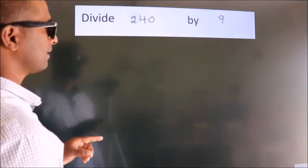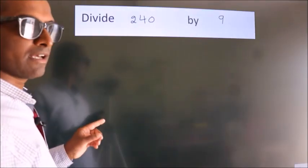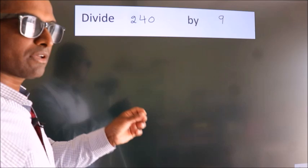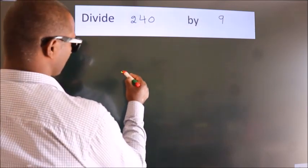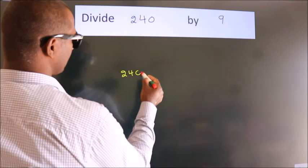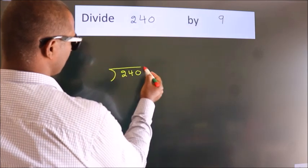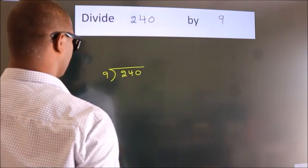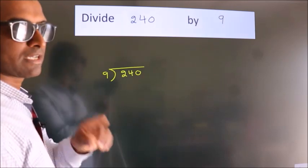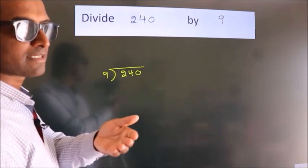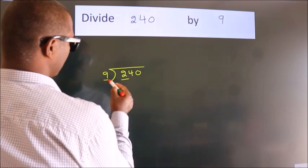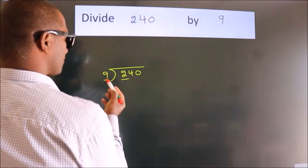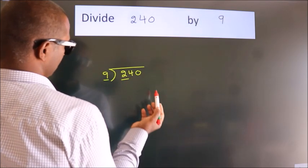Divide 240 by 9. To do this division, we should frame it in this way: 240 here, 9 here. This is your step one. Next, here we have 2. 2 is smaller than 9, so we should take two numbers: 24.